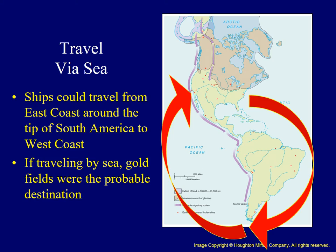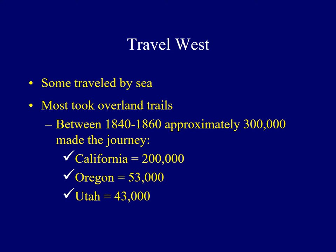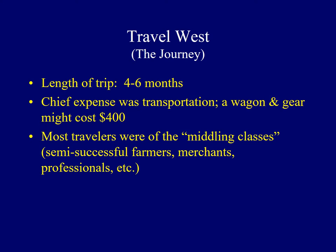If they took this route, California's gold fields were the most common destination. While some did travel by sea, the overwhelming majority of those who traveled westward took overland trails. It's estimated that between 1840 and 1860, approximately 300,000 individuals did so. Of those, the most common destination was California — about 200,000 traveled there — while over 50,000 went to Oregon, and more than 40,000 journeyed to Utah.